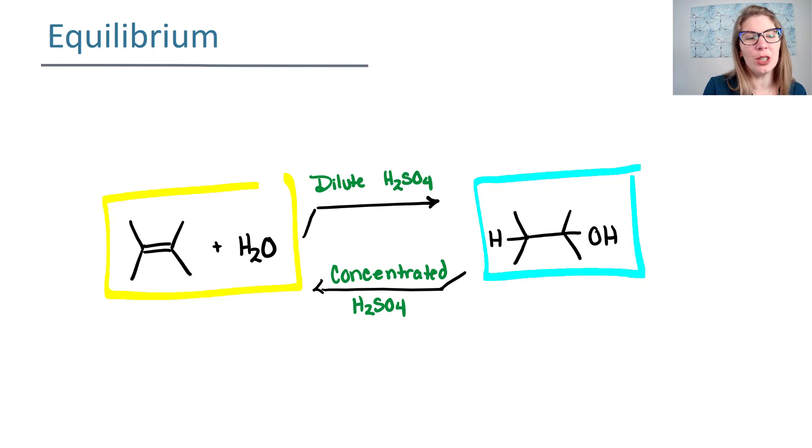So if we're looking at trying to create an alcohol, we're going to add dilute H2SO4 or dilute acid, because we need water in there in order for us to make the alcohol. Whereas if we add concentrated acid and usually some heat, we can take the alcohol and we can undergo one of the first reactions that you learned, that elimination reaction, where you make the alkene at the end.